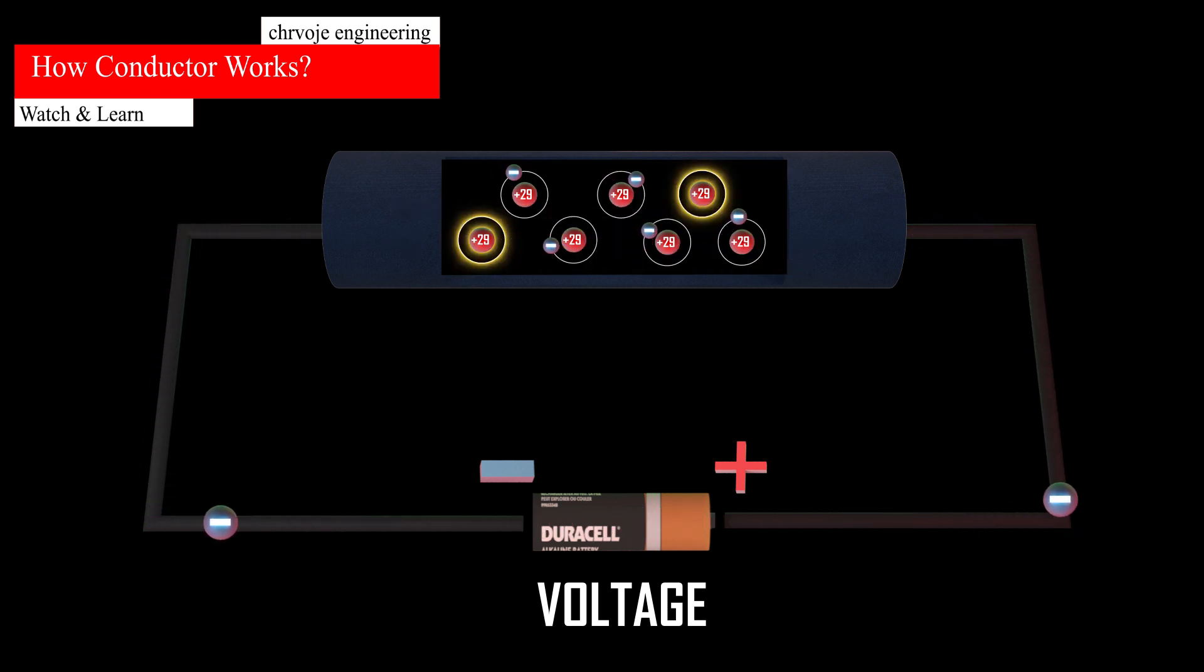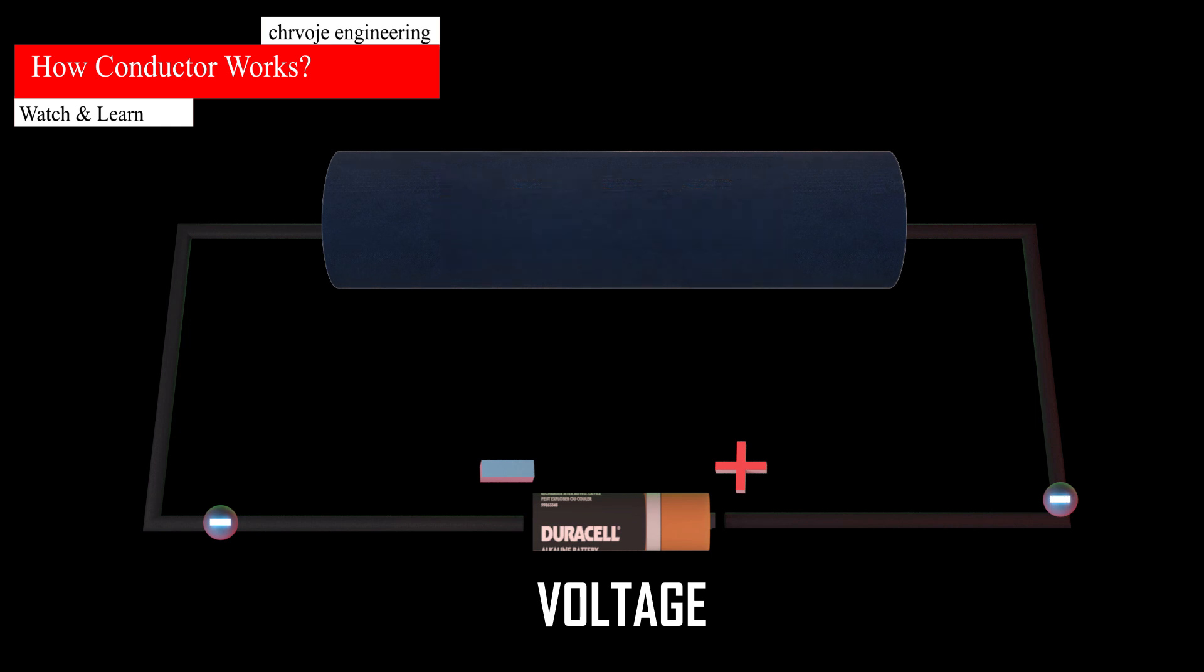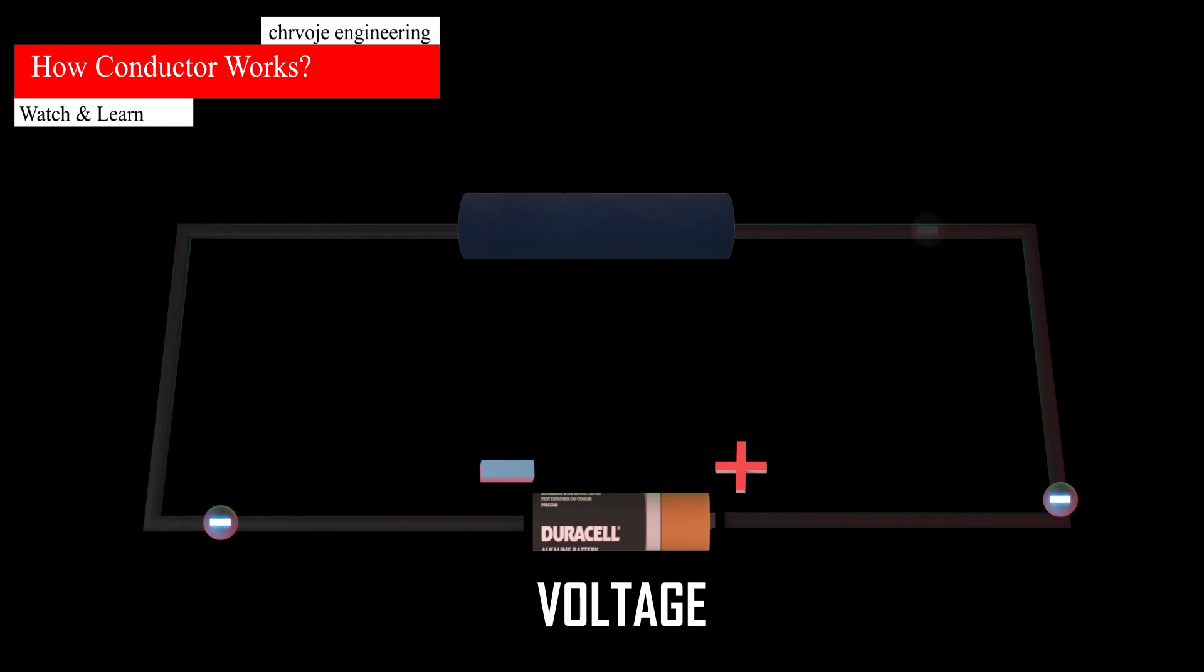The materials that have free electrons and allow electrical current to flow easily are called conductors. Conductors such as copper have low resistance to electrical current flow and thus are used extensively in electrical circuits.